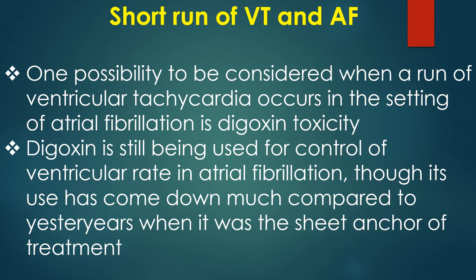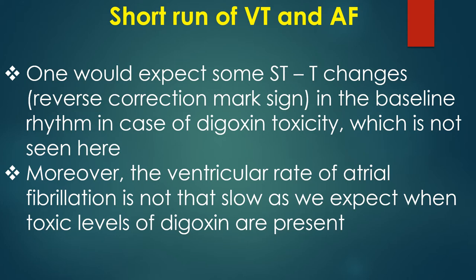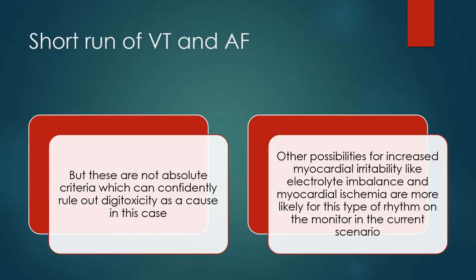Digoxin is still being used for control of ventricular rate in atrial fibrillation, though its use has come down much compared to previous years when it was the sheet anchor of treatment. One would expect some STT changes, i.e. reverse correction mark sign in the baseline rhythm in case of digoxin toxicity, which is not seen here. Moreover, the ventricular rate of atrial fibrillation is not as slow as we expect when toxic levels of digoxin are present.